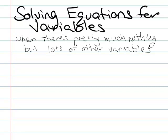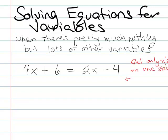It's pretty standard to what we usually do. If you've got something like 4x plus 6 equals 2x minus 4, normally your strategy is going to be to get only x's on one side and only numbers on the other side.